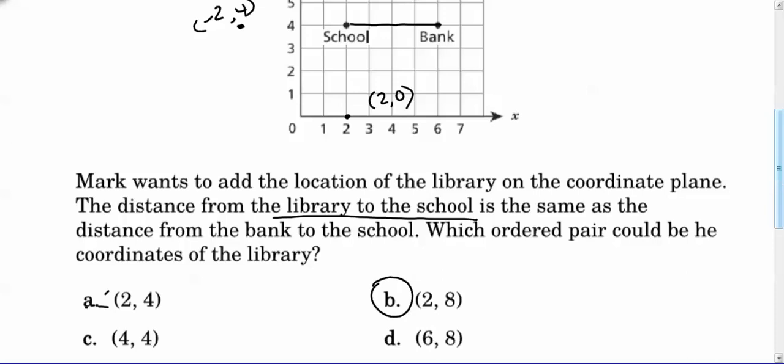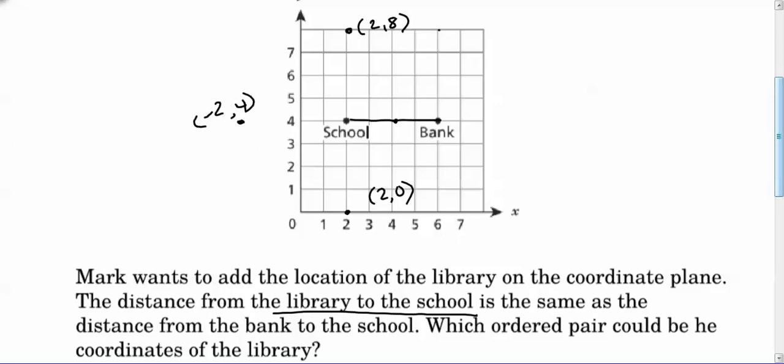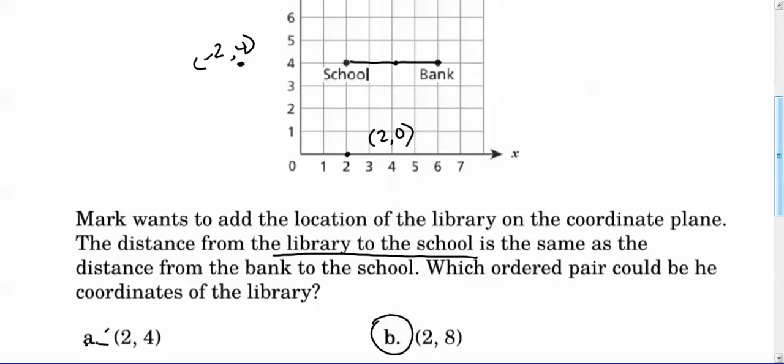Choice C, four, four would be halfway between the school and bank, because that would be right here, but that's not what we're looking for. And six, eight would be the location if you went four above the bank. But that's not what you were looking for. You're looking for something that's the same distance from the library to the school, which is the same as school to the bank. So that's really just reading carefully. You're looking for something that's four away from the school.